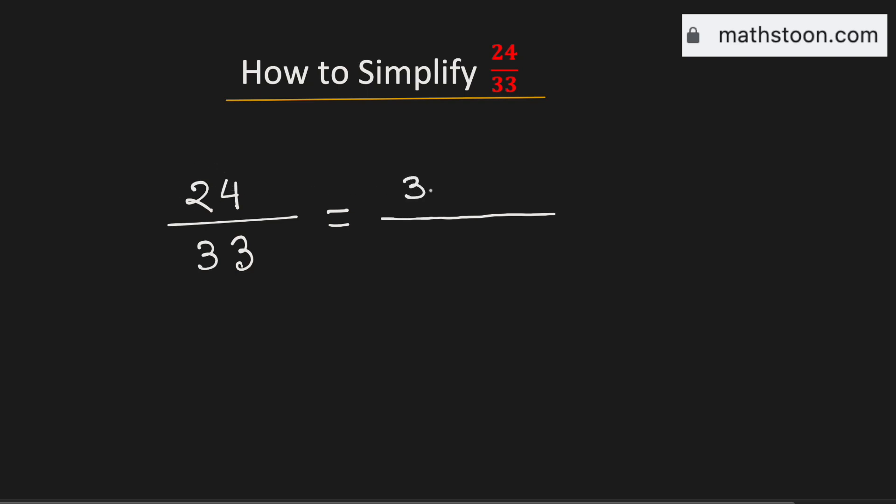24 can be written as 3 times 8, and 33 can be written as 3 times 11. We can cancel 3 out, therefore this fraction is now equal to 8 over 11.